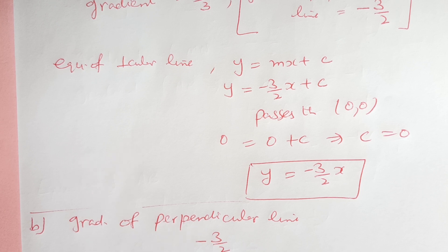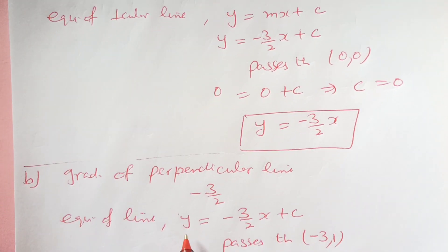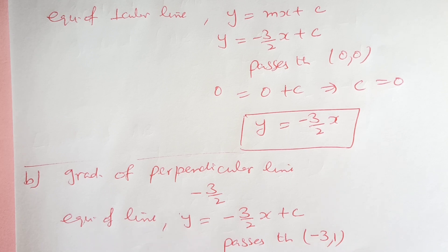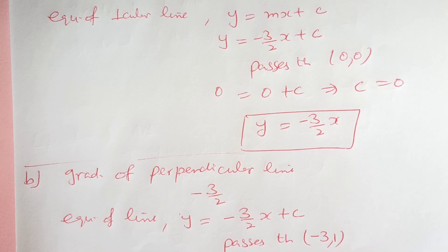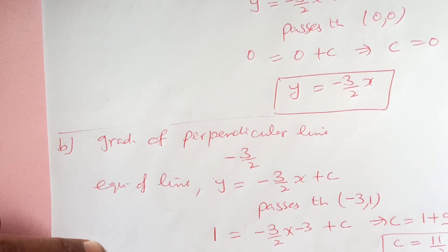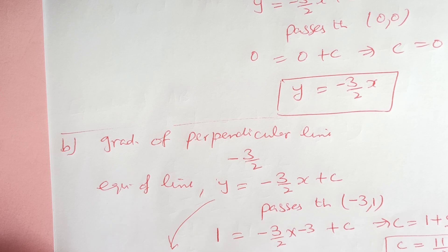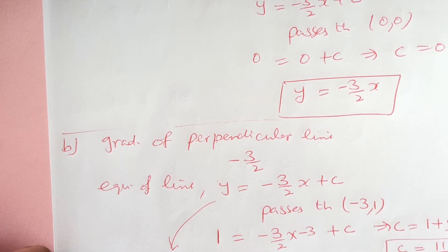The equation of the line will be y equals negative 3 over 2 x plus c. This line passes through the point (negative 3, 1), so x is negative 3 and y is 1. Substituting: 1 equals negative 3 over 2 times negative 3 plus c, which gives 1 equals 9 over 2 plus c, so c equals 1 minus 9 over 2, which is negative 7 over 2... arriving at c equals 11 over 2. Therefore the equation of the line is y equals negative 3 over 2 x plus 11 over 2.